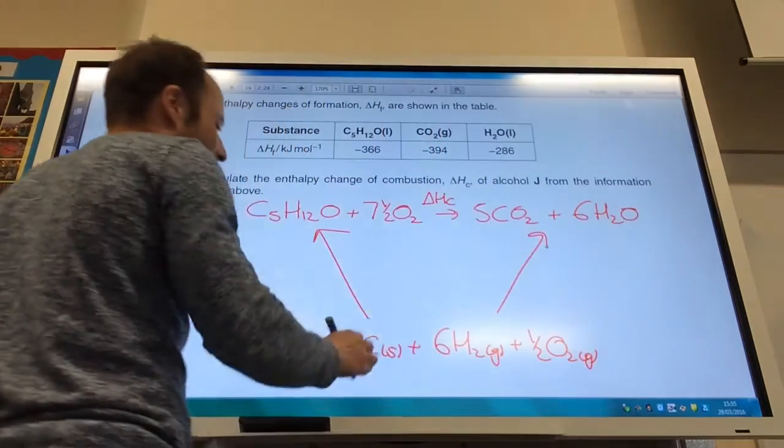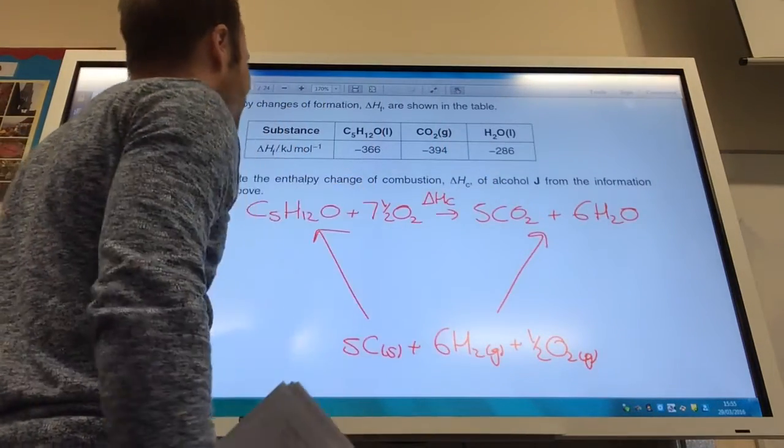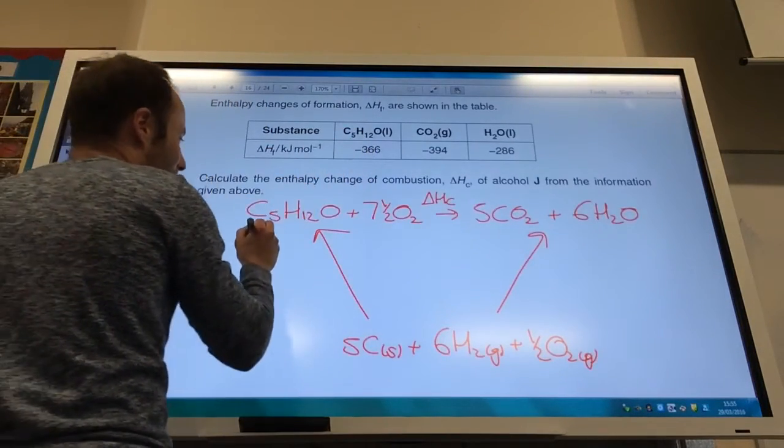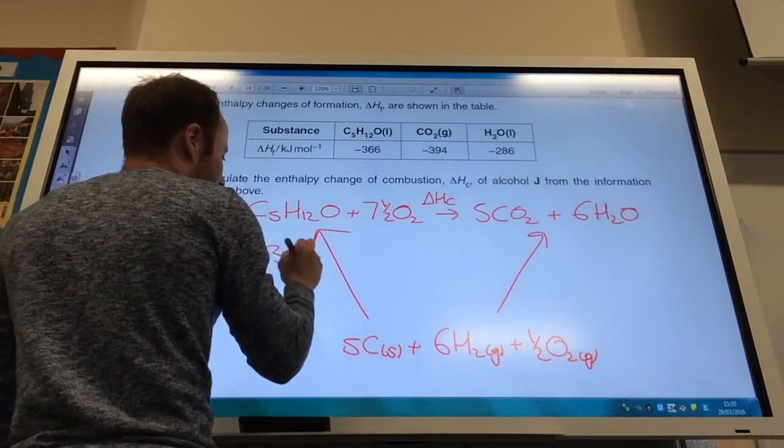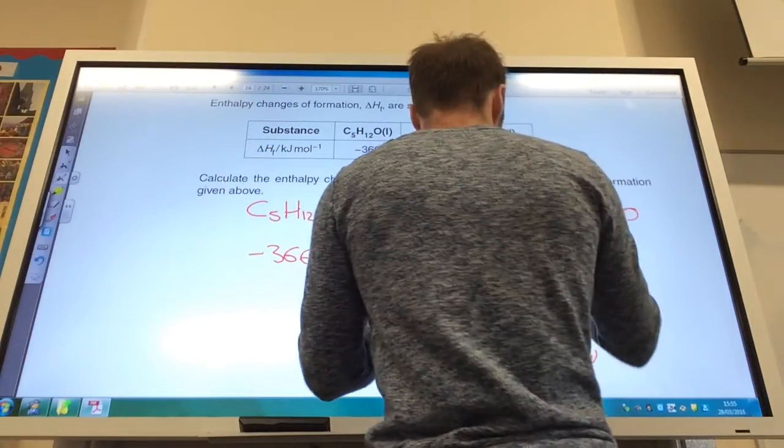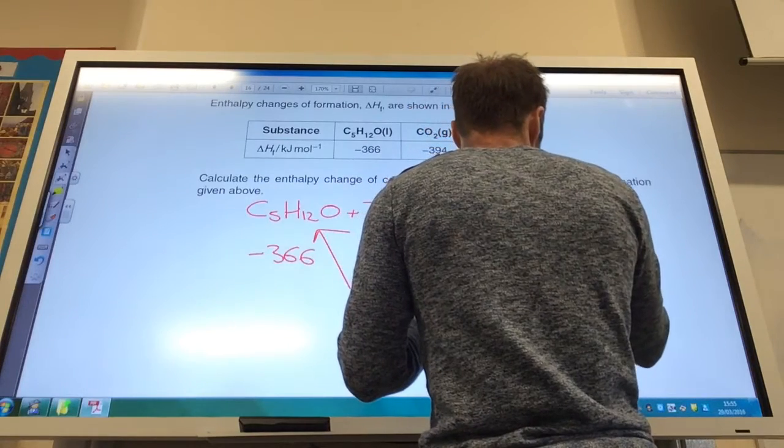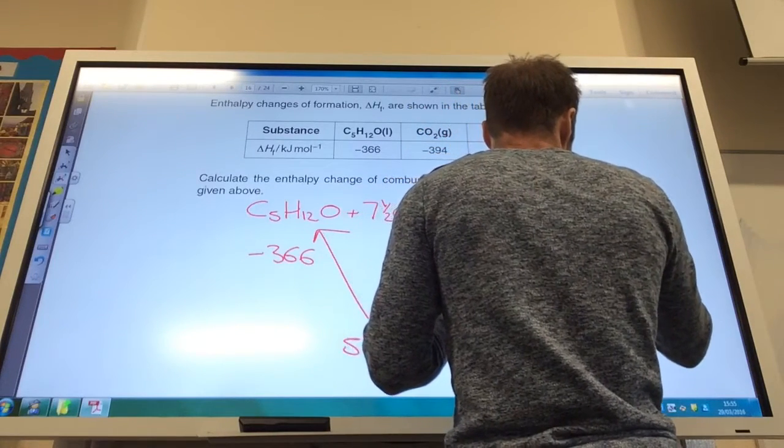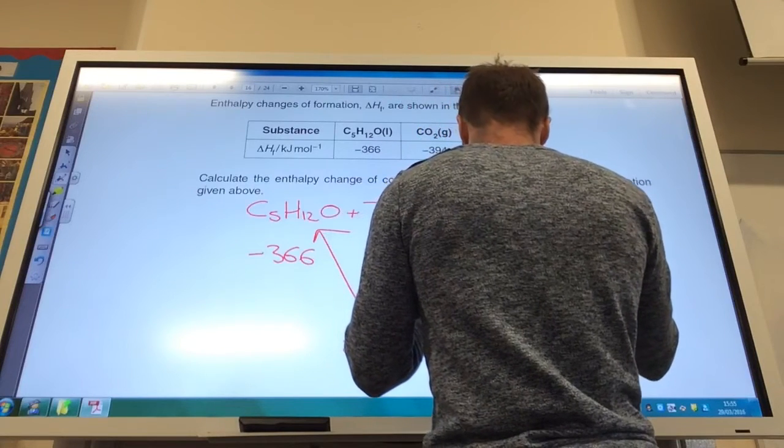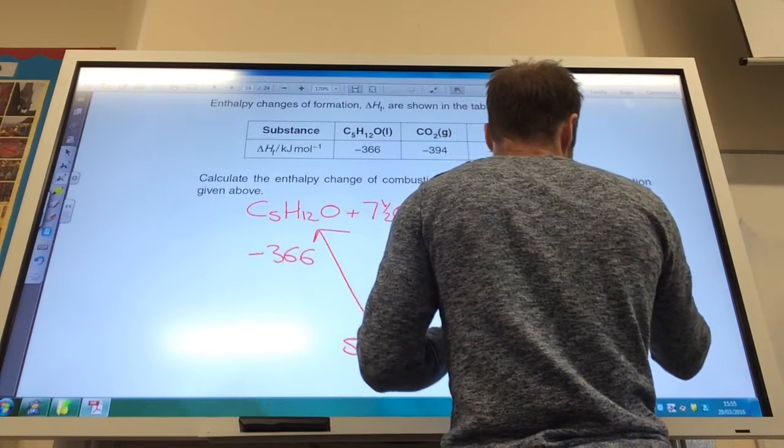Because the data relates to taking my elements and making these up here. So, C5H12O is minus 366. Carbon dioxide is minus 394, so five times minus 394. I've got six waters as well, so six times minus 286.